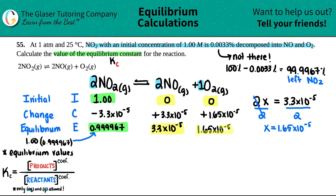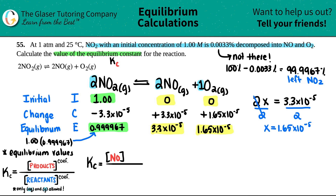Now we have all equilibrium values, so let's write the specific Kc expression and plug in the numbers. Products over reactants: Kc = [NO]² × [O₂] / [NO₂]². The coefficient 2 on NO means we square it; O₂ has coefficient 1 so it stays as-is; NO₂ has coefficient 2 so it is also squared.